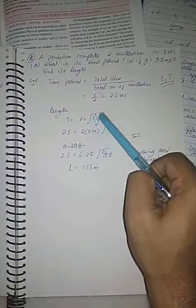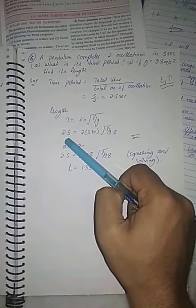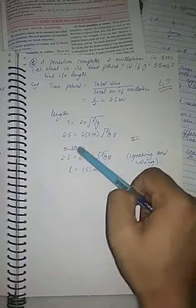relation: T equals 2π root(l upon g). 2.5 in place of T because this is the time period of one oscillation. 2 into 3.14 root(l upon g), again we have to do the squaring and solve this. You are able to get the length of the pendulum, that is 1.55 meters.